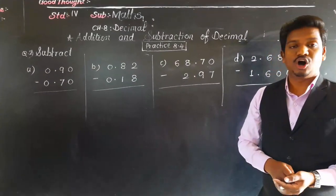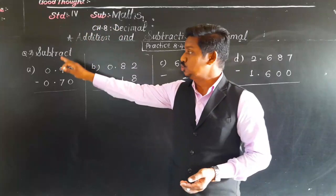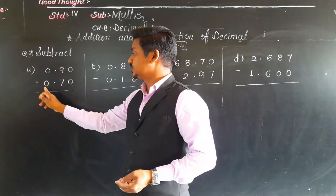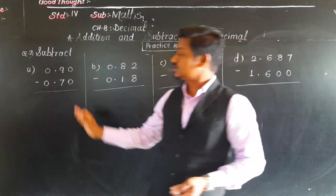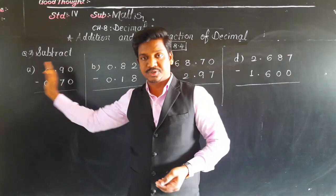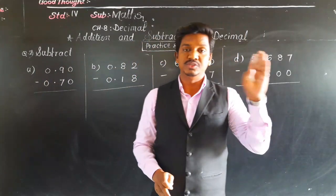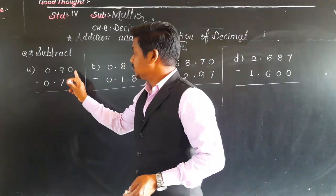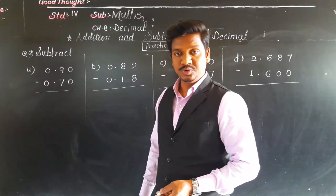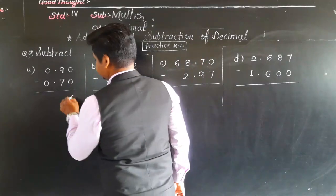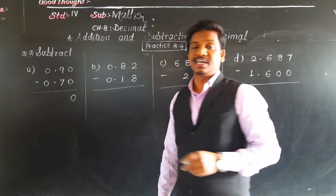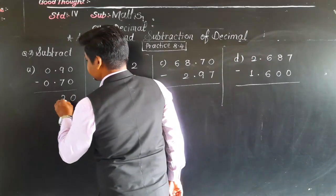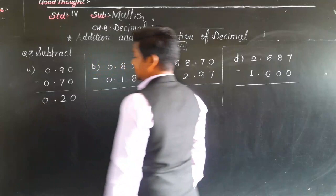See here, subtraction of decimals. Question 2, subtract the following. See first: 0.90 minus 0.70. Again see, we have to start to subtract from the right side, back side. And all the rules of subtraction which we have used while subtracting whole numbers, we have to use here. 0 minus 0 - 0 minus 0, obviously this is 0. 9 minus 7 - what is 9 minus 7? Take 9 fingers, cut 7 fingers, remain 2. Then decimal point, then 0 minus 0 is 0. It was easy.